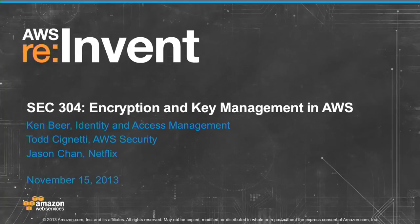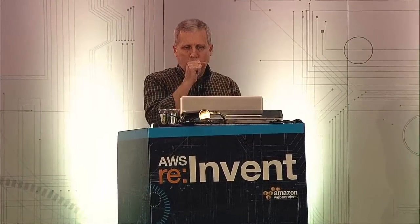All right. I think we'll get started this morning. I want to thank everybody for coming out first thing in the morning after the party last night. Hope everybody had a good time. Last day in Vegas. We are going to talk today about encryption and key management in AWS. This is actually the first year that we've talked much on this topic, and we have a lot to share in this area. My name is Ken Beer, and I'm a product manager in the identity and access management team. My colleague Todd Cignetti and Jason Chan from Netflix will be coming up throughout the presentation to talk about various encryption topics.